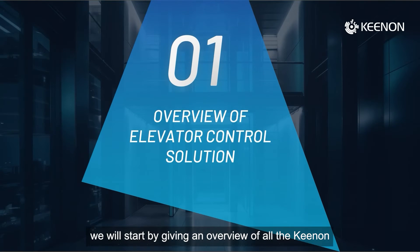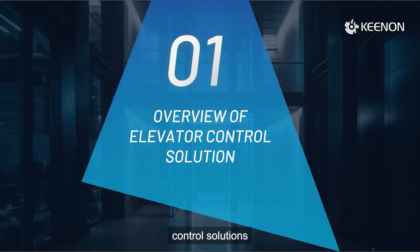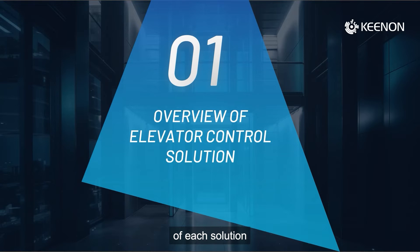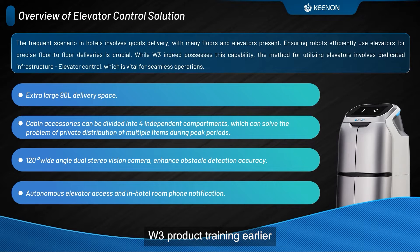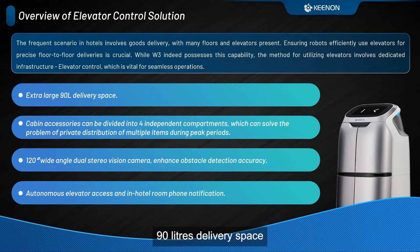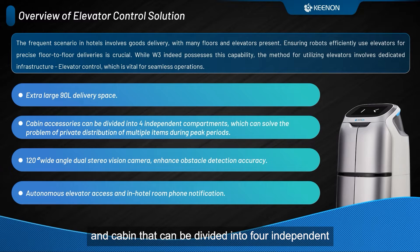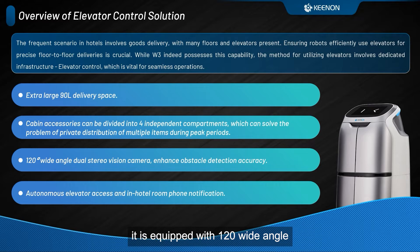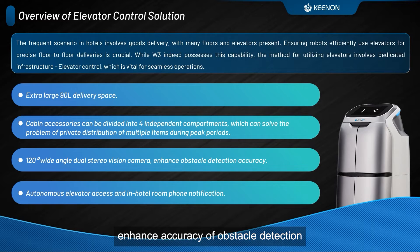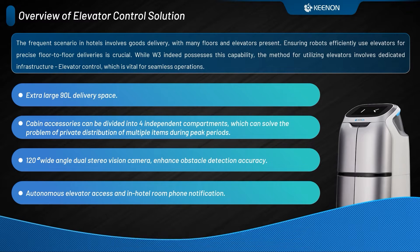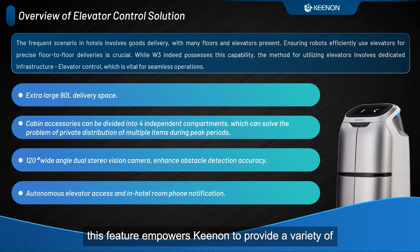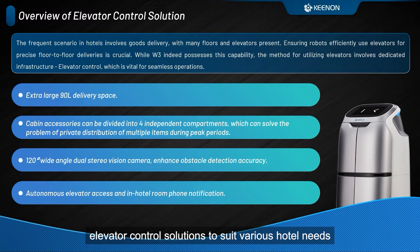Firstly, we will start by giving an overview of all the Kenan Overseas Elevator Control Solutions, providing a comprehensive introduction to the advantages and disadvantages of each solution. I assume you've learned about W3 product training earlier. W3 has several features, including extra-large 90-liter delivery space and a cabin that can be divided into four independent compartments. Moreover, it is equipped with a 120-degree wide-angle dual-stereo vision camera, which enhances accuracy of obstacle detection. The standout feature of W3, however, is its automatic elevator control capability. This feature empowers Kenan to provide a variety of elevator control solutions to suit various hotel needs.